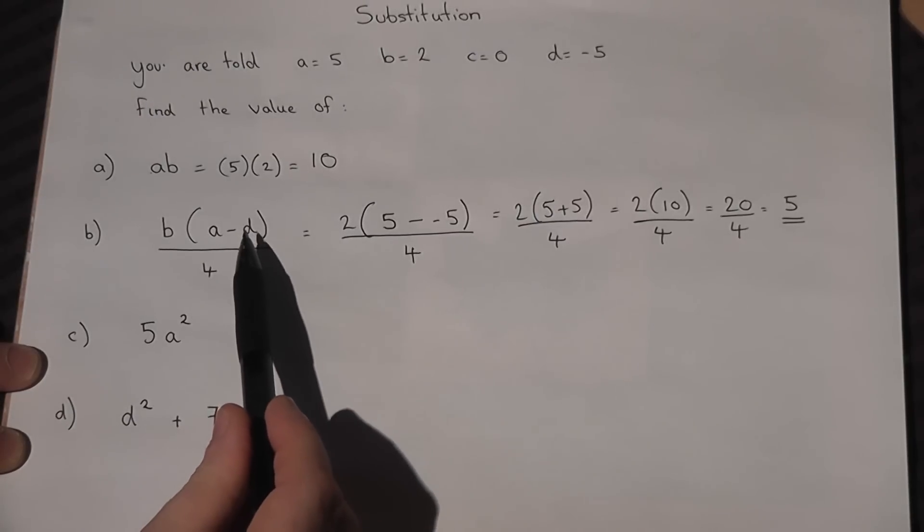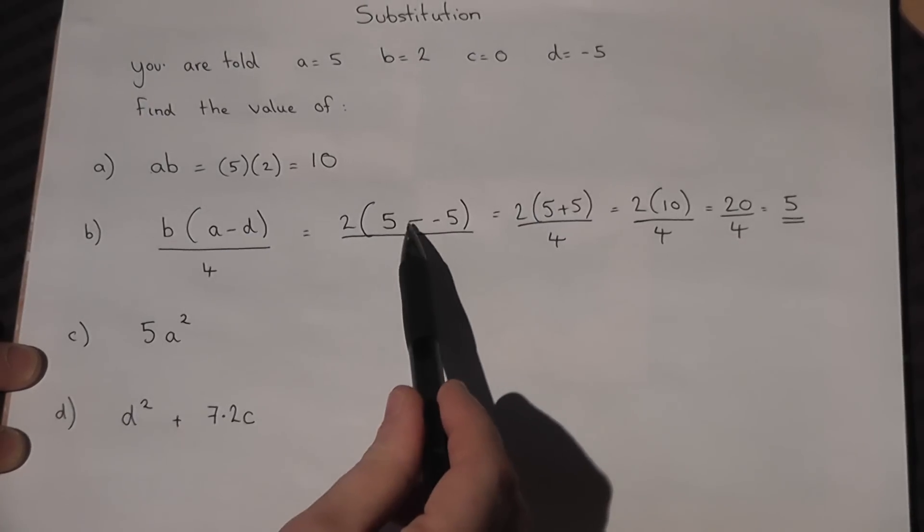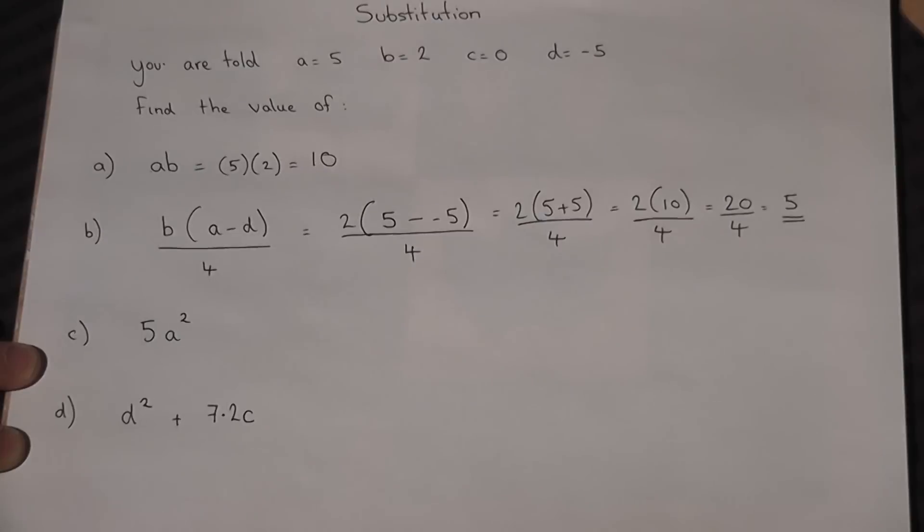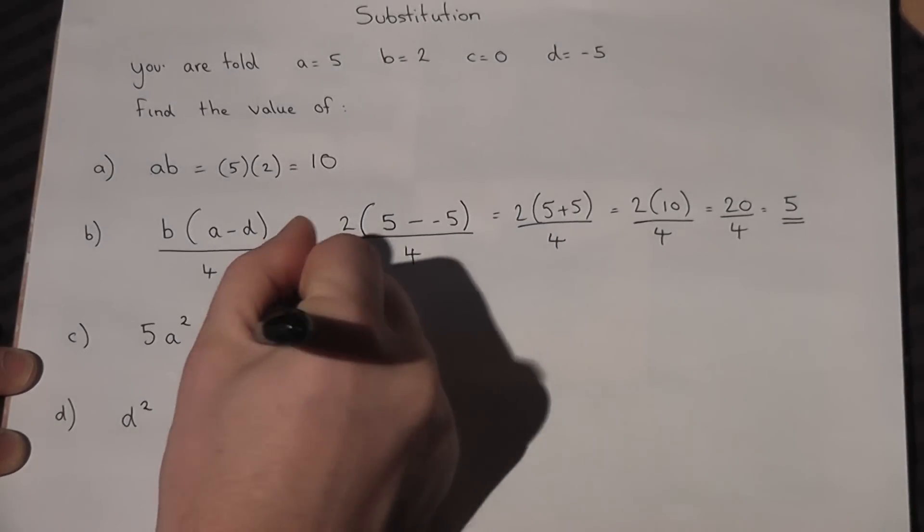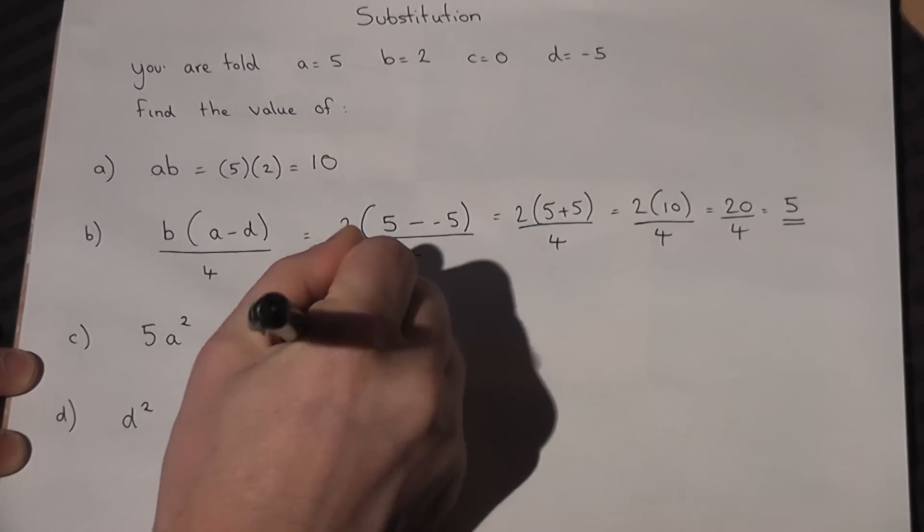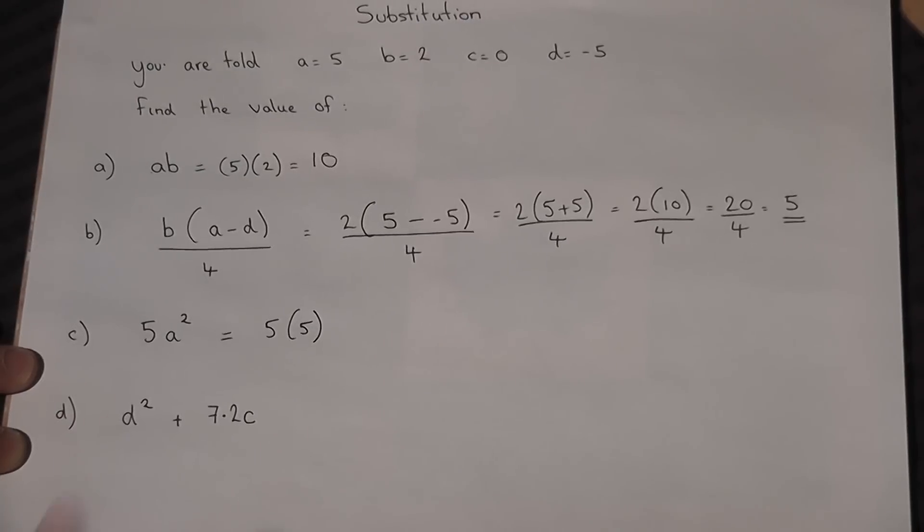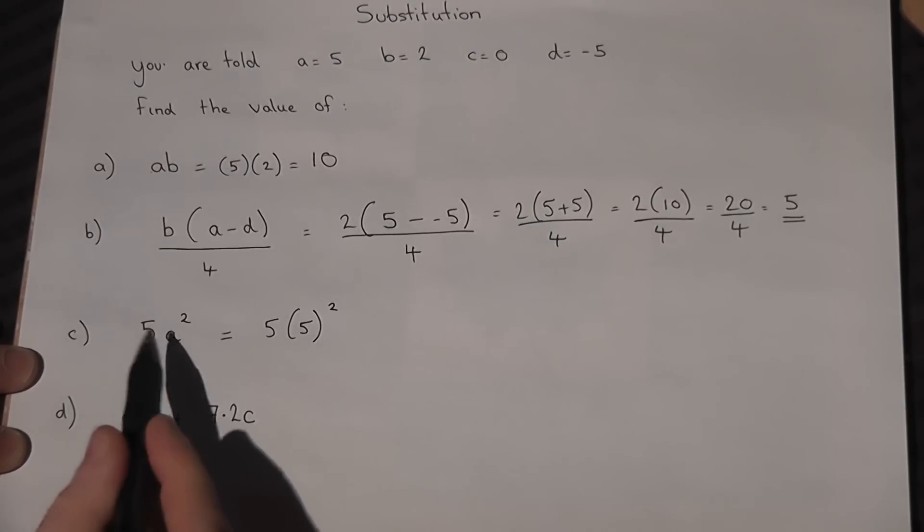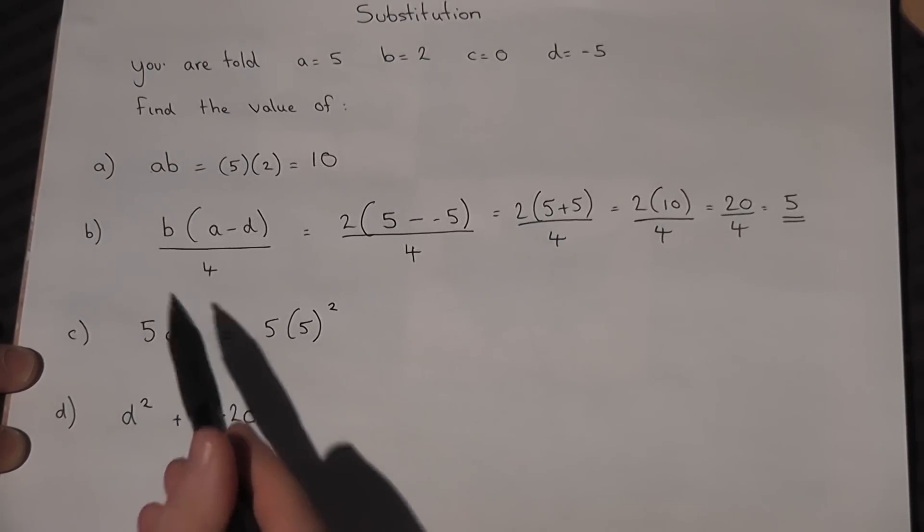The third one: 5a². Be very careful. Write out the expression again with a equal to 5, put it in brackets and square it. It's important we do the square part first—we don't do 5 times a, we do a squared.